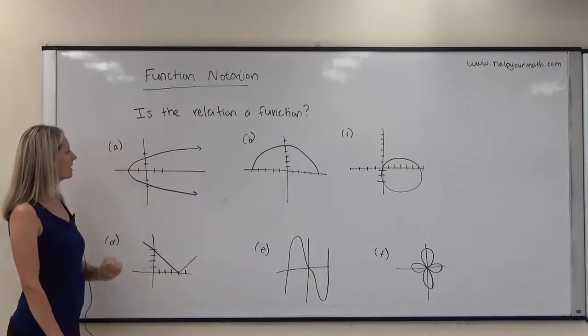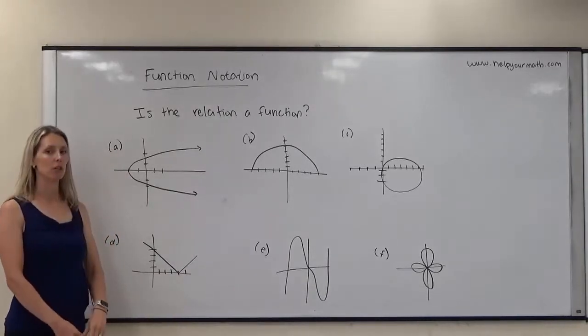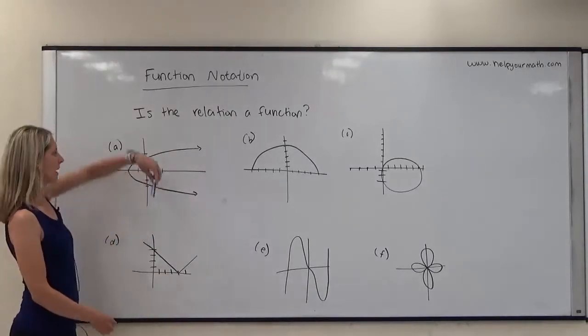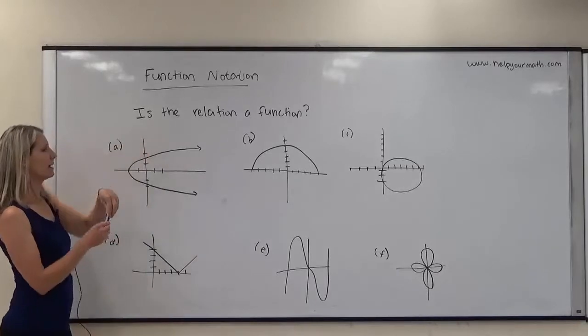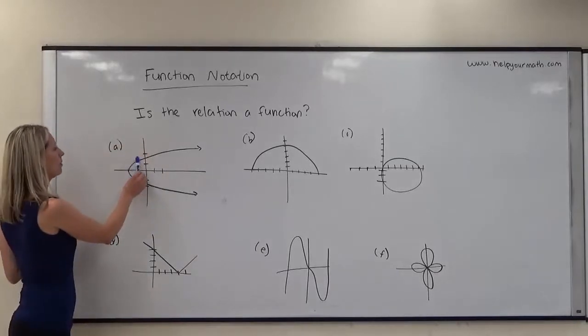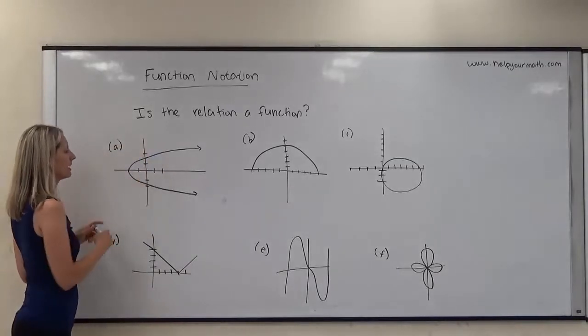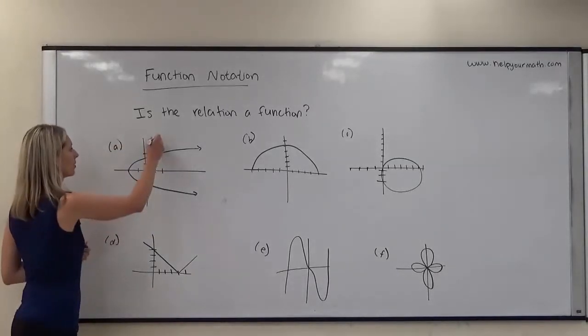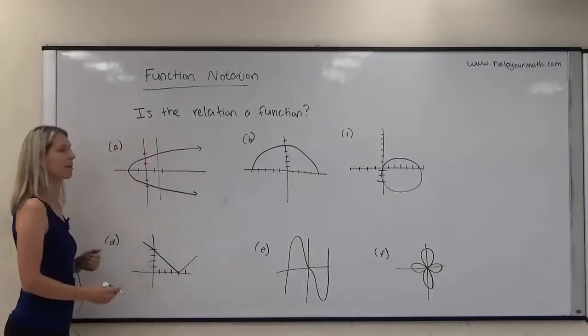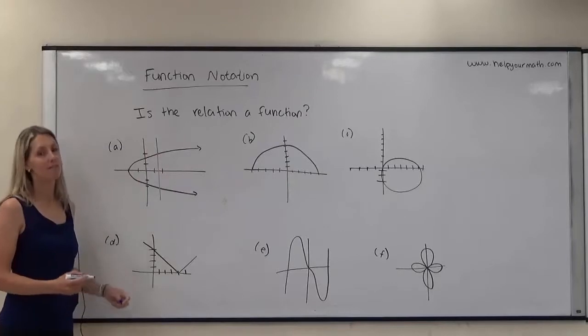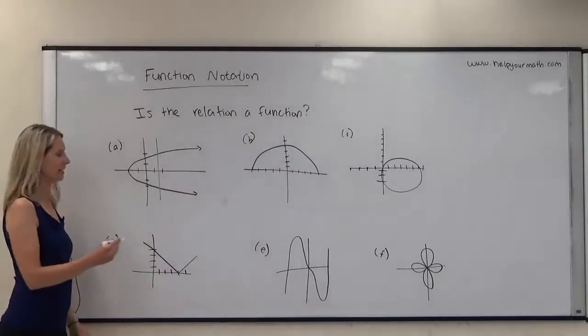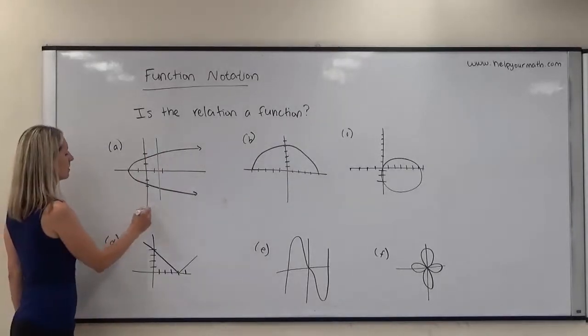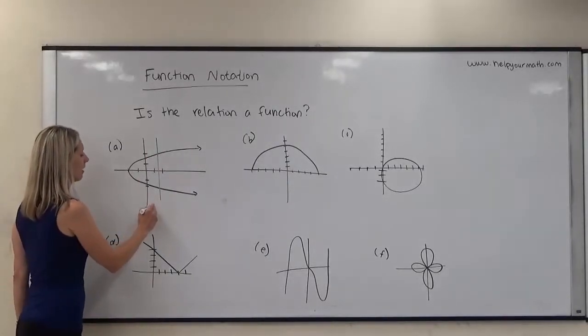So letter A — is this relation a function? Can I draw a vertical line and hit the graph no more than one place? No, because I can draw a vertical line right there and it fails the vertical line test. So this is not a function.